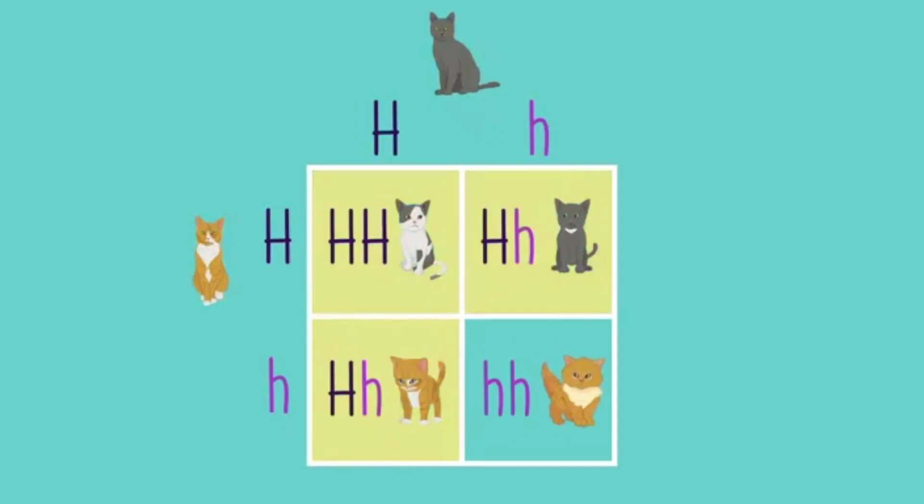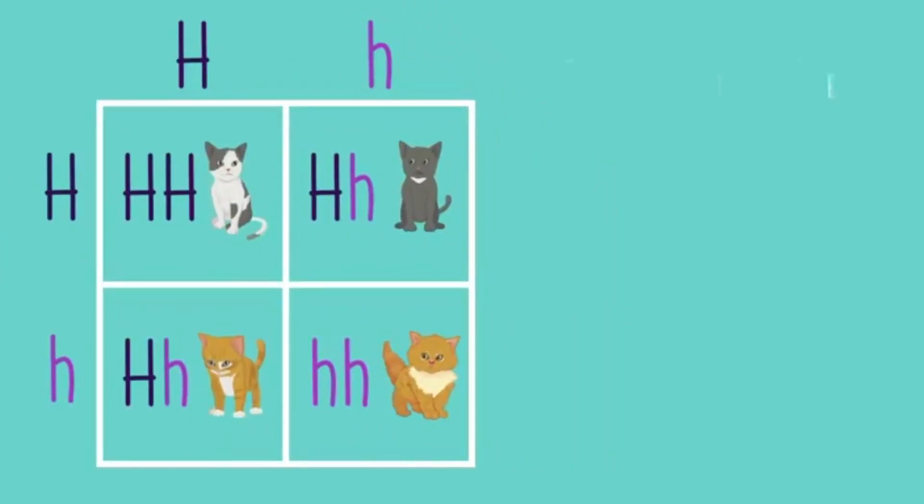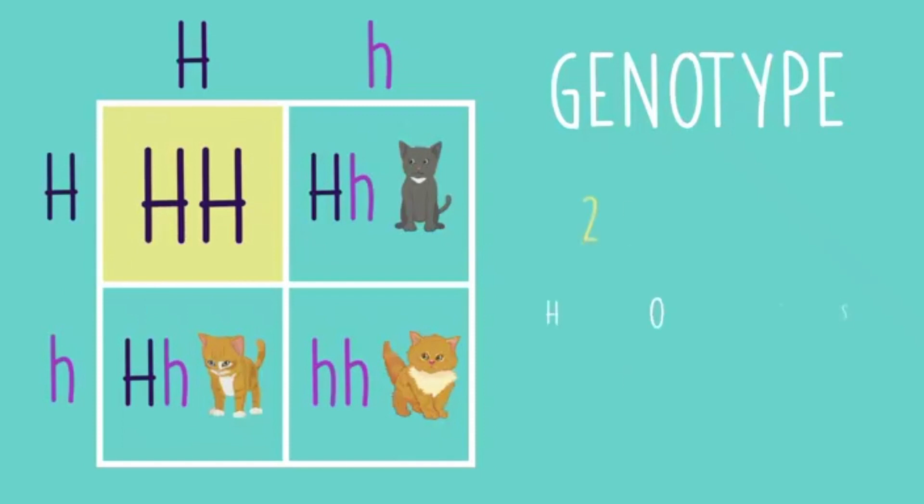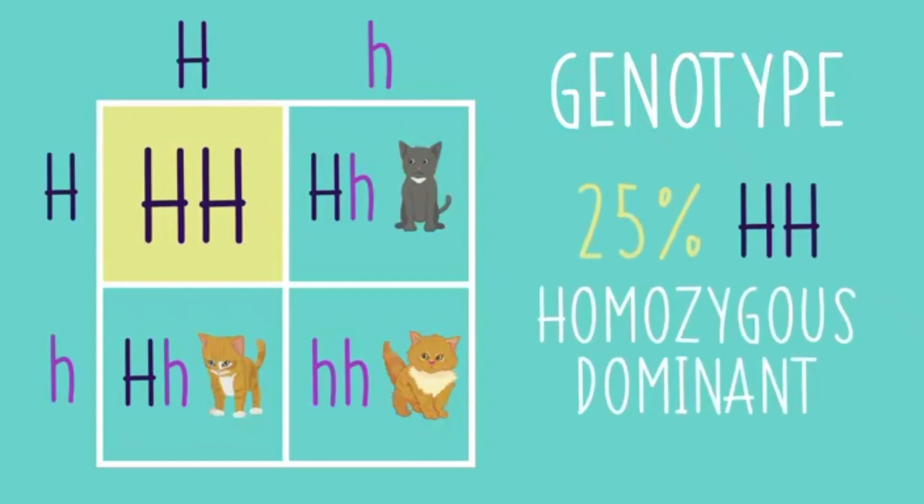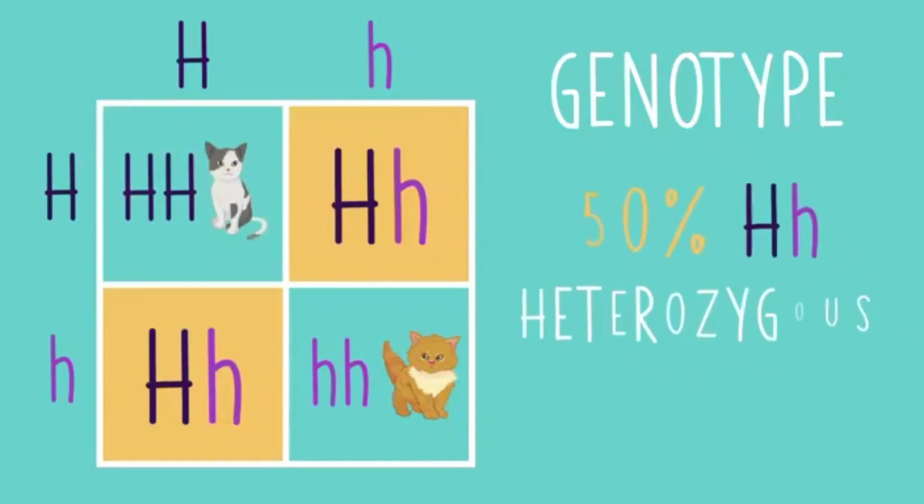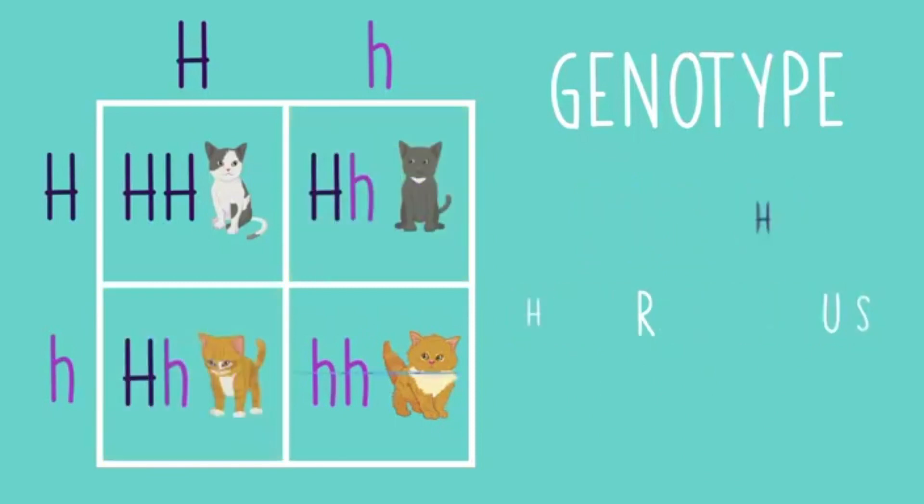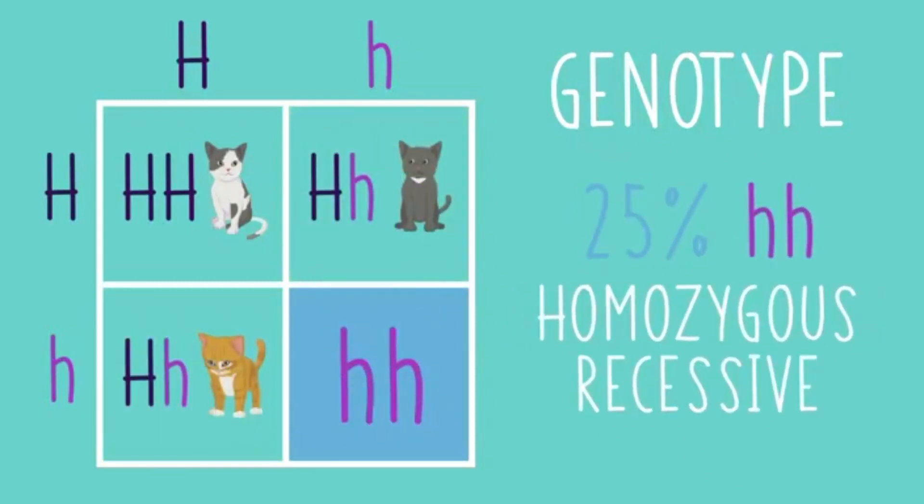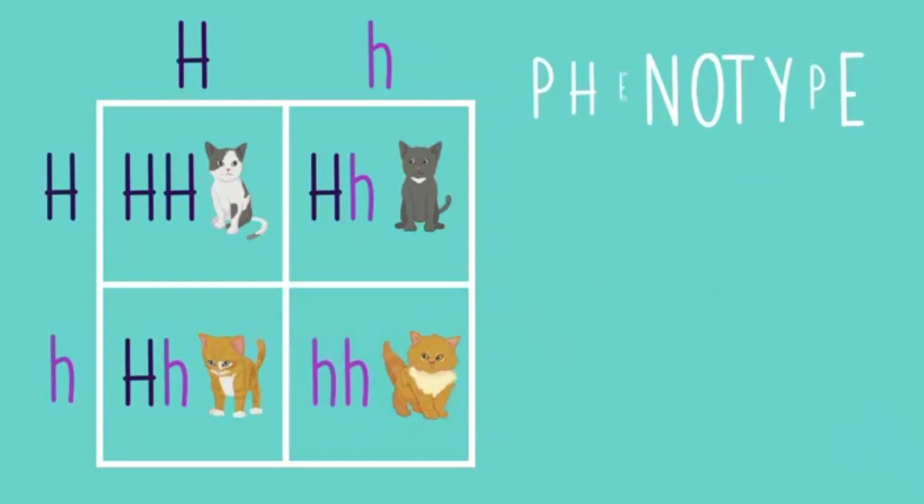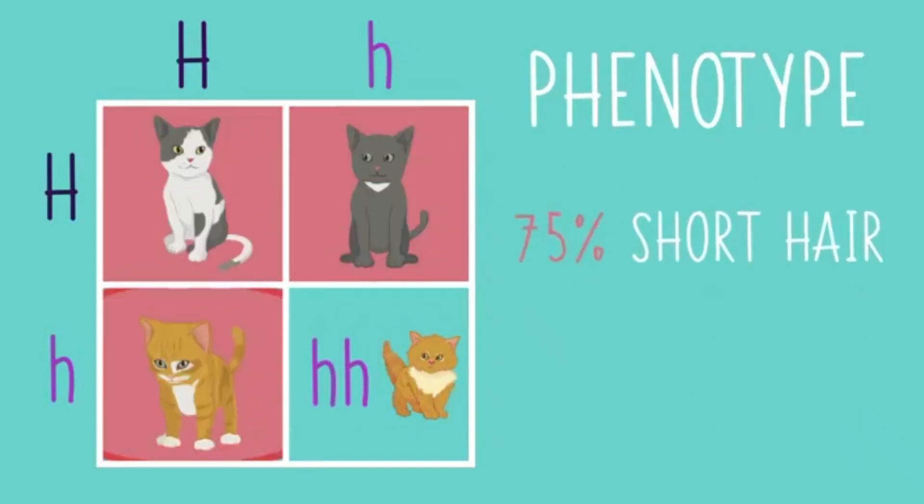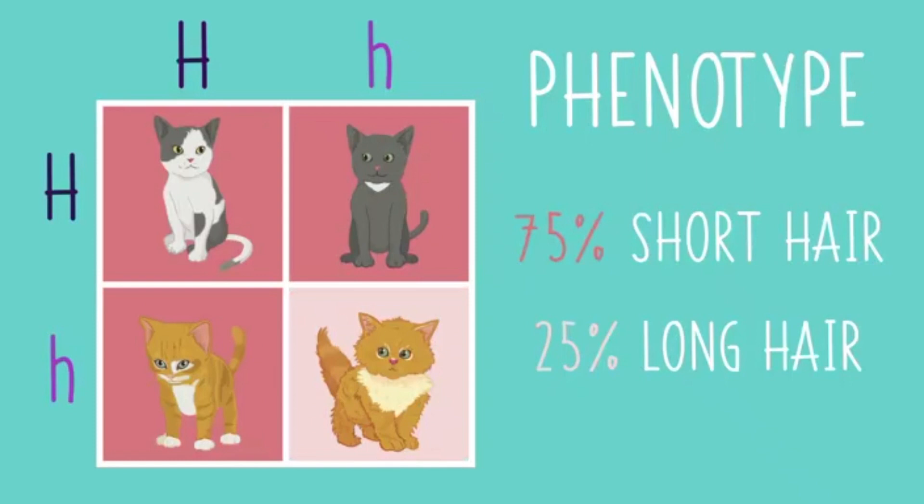Kittens with a dominant allele will have short hair. Now, you can work out the probability of different genotypes occurring in the offspring. Here, the probability is that 25% will be homozygous dominant, 50% heterozygous and 25% homozygous recessive. The expected phenotypes would be 75% short-haired kittens and 25% long-haired kittens.